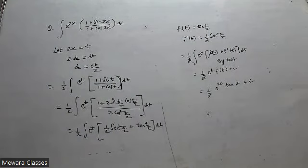So the overall point is this: if in place of x something else is appearing, then you have to assume that as t, and then apply the property.